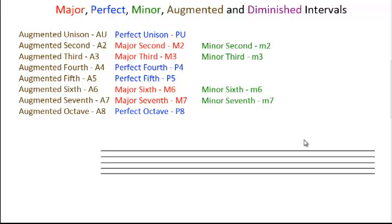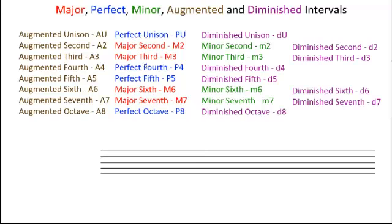So what is a diminished interval? A diminished interval is any perfect interval that has been lowered by one semitone, or any major interval that has been lowered by two semitones. You can see that a perfect unison lowered by one semitone becomes a diminished unison. A major second lowered by one becomes a minor second, lowered by another becomes a diminished second — so it's two semitones. A minor third has to be lowered by two to become diminished, but a perfect fourth only has to be lowered by one.